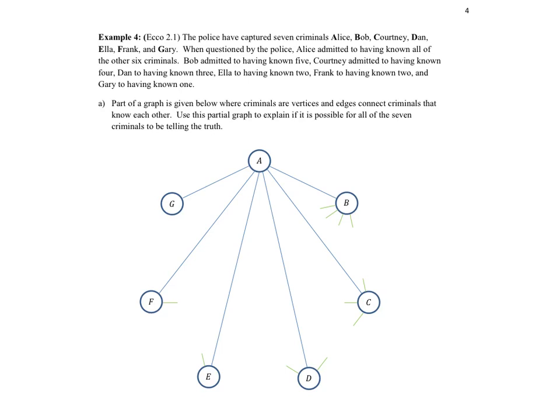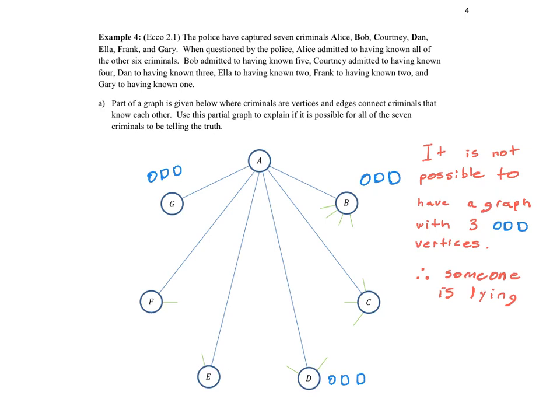So A is even with six. B is odd because it has five. C is even. D is odd, it has three. And E and F are both even at two. And G is the other odd one, saying that I know one other of these criminals. So it is not possible to make all of these connections and build a graph because we have one, two, three odd vertices. An odd amount of odds. So no such graph is possible to be built. So someone must be lying.